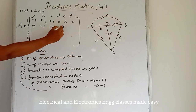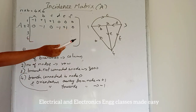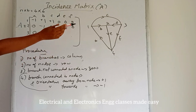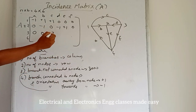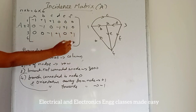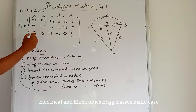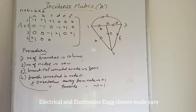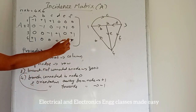Continuing node 2: E is away from the node, so plus 1; F is not connected, so 0. While considering node 3: A and B are not connected; C is incident towards node 3, so minus 1; D is away from the node, so plus 1; E is not connected, so 0; F is away from the node, so plus 1. Next, node 4: A is away from the node, plus 1; B is not connected; C is not connected; D is not connected; E is towards the node, minus 1; F is also towards the node, minus 1.